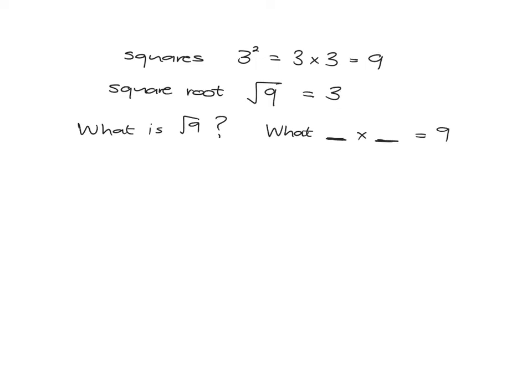So they're saying, what number, multiplied by itself, will give you 9 as the answer? And we know quite obviously that the answer to that question is 3. So the square root of 9 is 3.